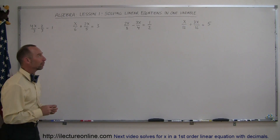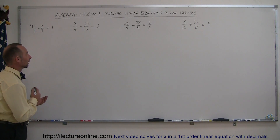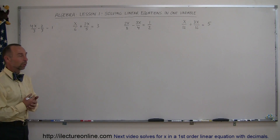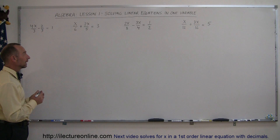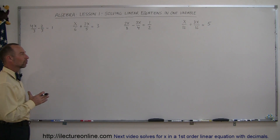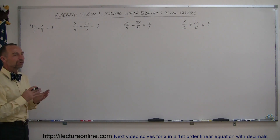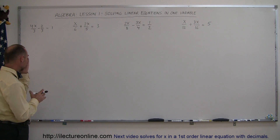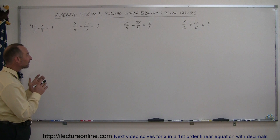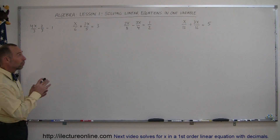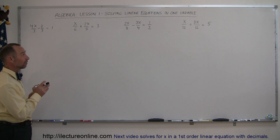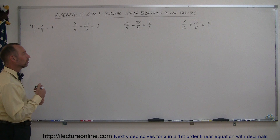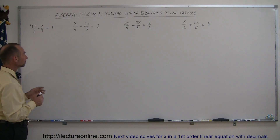Here's another set of examples for our lesson one, solving linear equations one variable. Here we have fractions in our equation, so we have to get rid of the fractions first. I put four different kinds of fractions on there, and you'll see in just a moment why there are four different kinds of fractions and how you need to manipulate these.